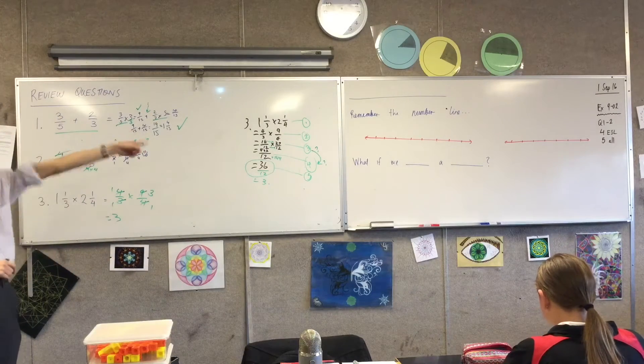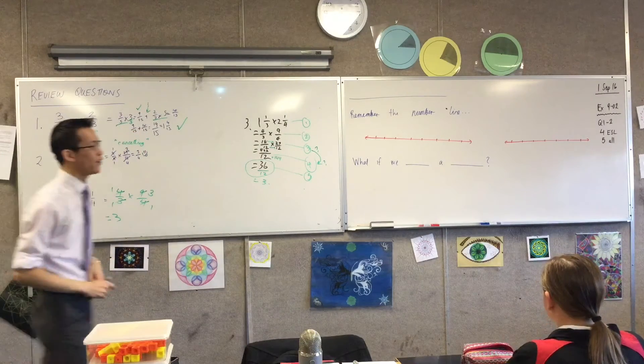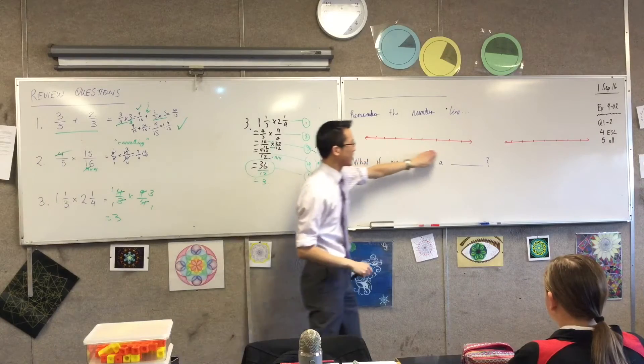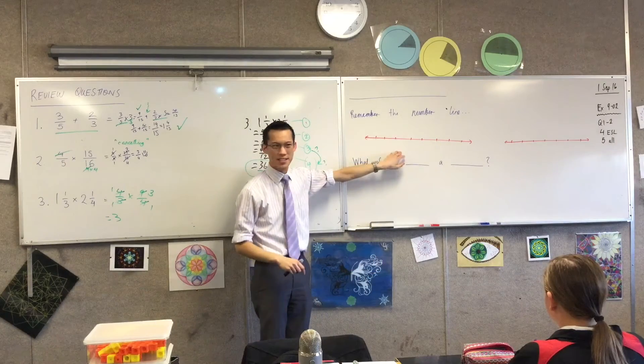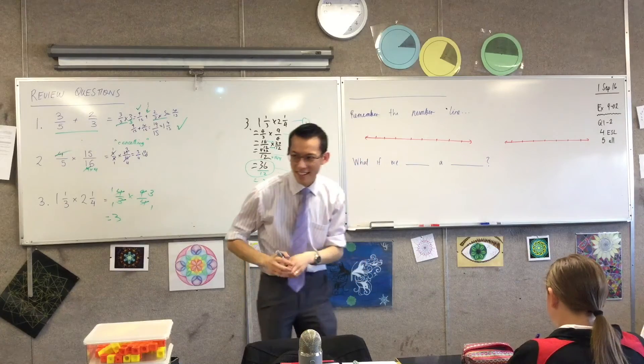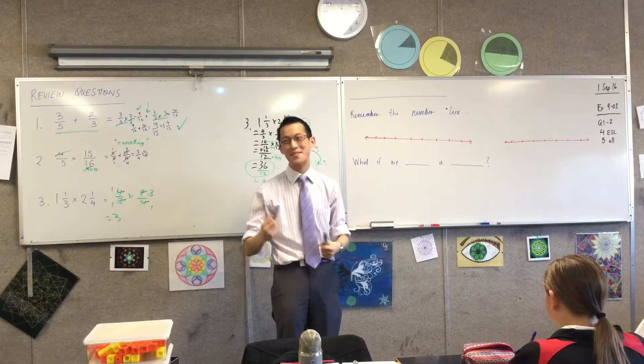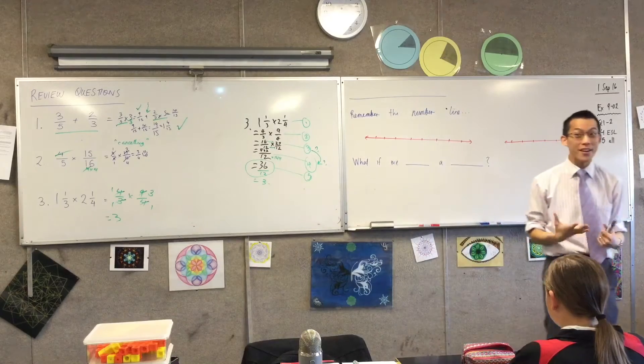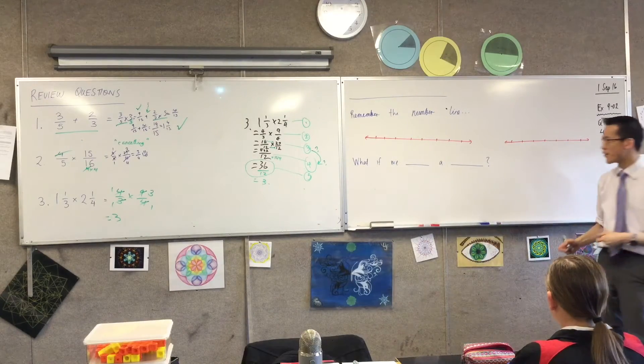I want you to remember the number line. We've seen the number line before. Here's a number line. Missing some things though, what could I put onto this to make it a little more complete? Yeah Jaren, what do you reckon? Numbers. Numbers would be good to put on a number line. What's the most important number on the number line? It's zero. It's zero, very good.